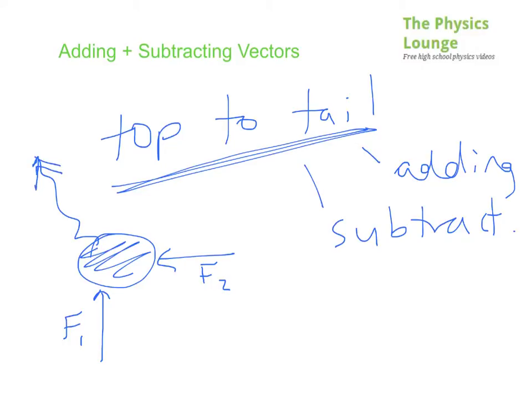That's not a vector, I'm just indicating the direction. If we're adding them up to find the net force, the total force, we would add top to tail. F1, there's the top and there's the tail, F2. F1 plus F2.